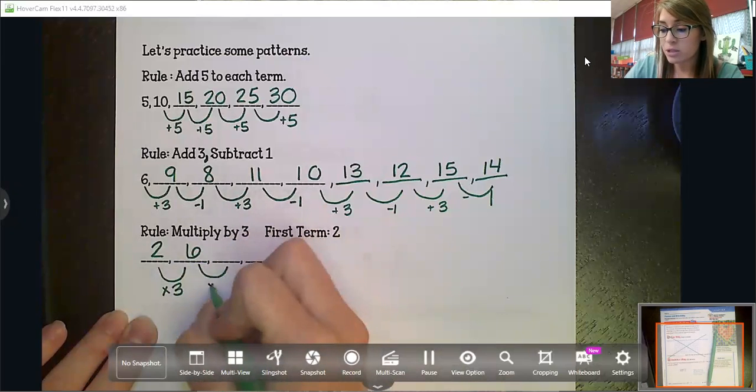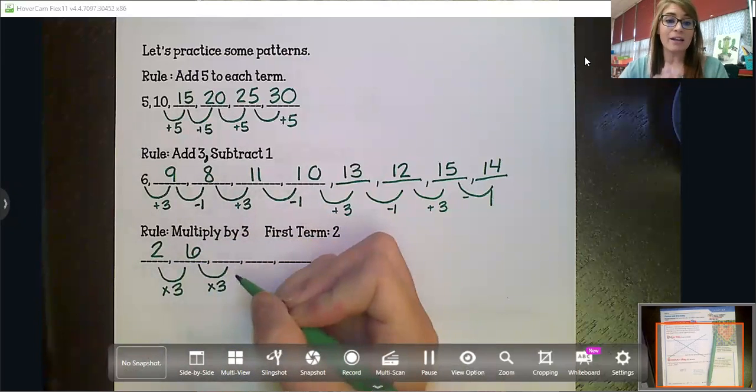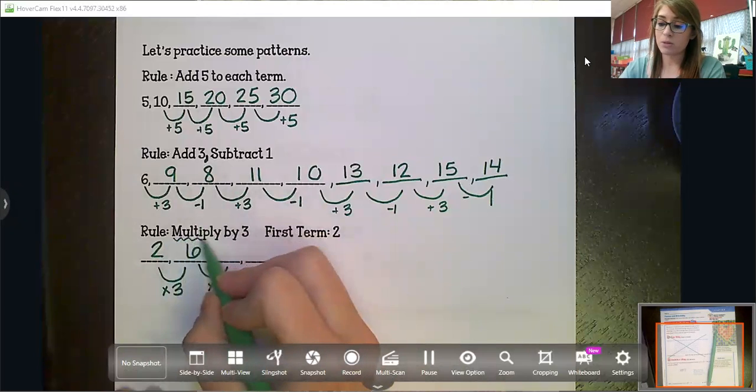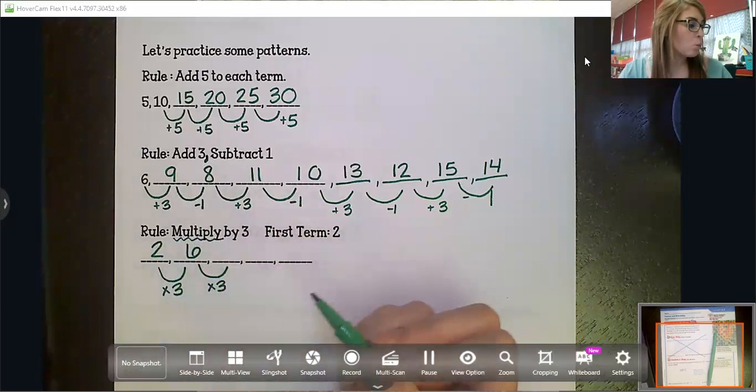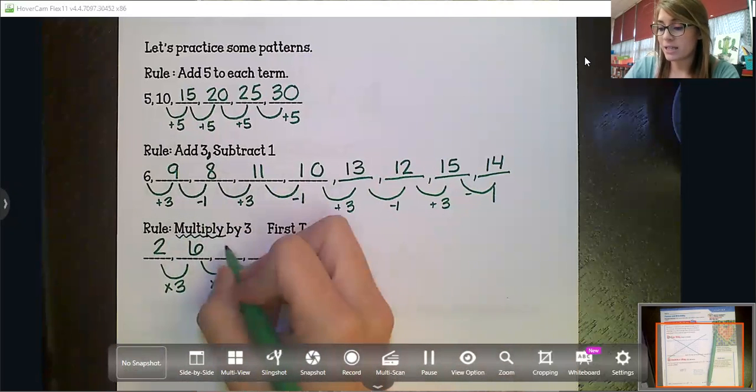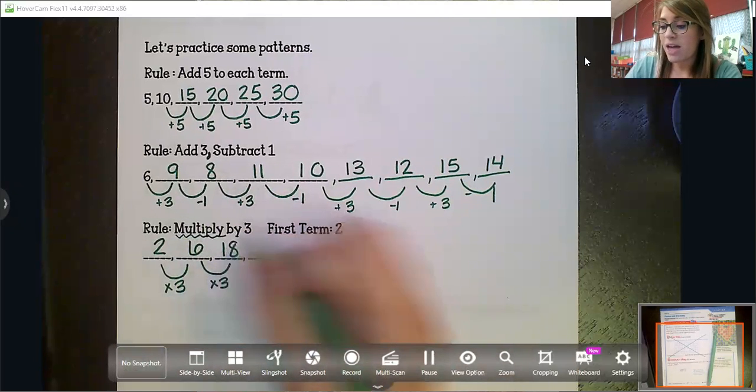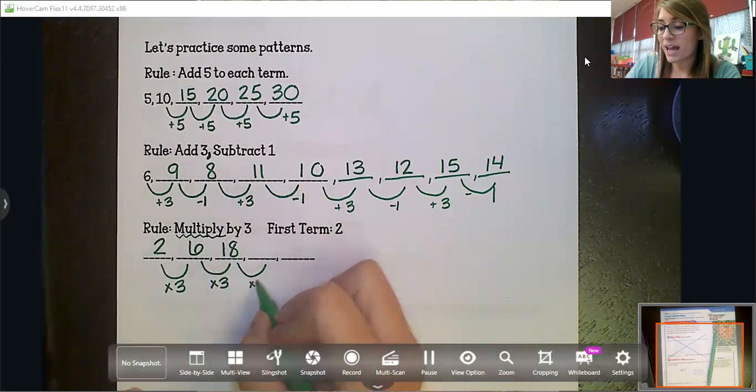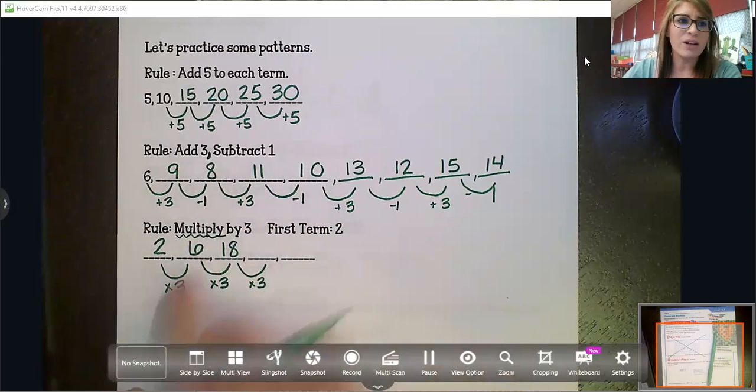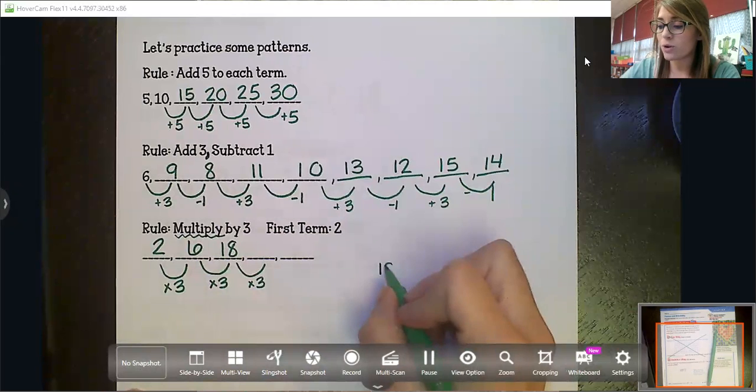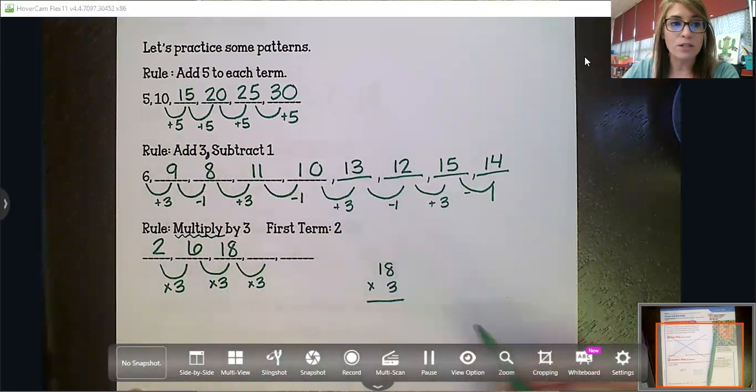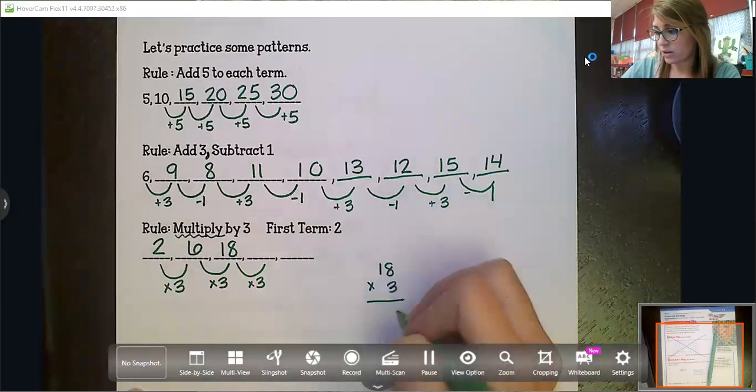Six times three. Now make sure we're not adding three because the rule does say multiply. Six times three is 18. And then we have to multiply again. 18 times three. Now we don't know 18 times three off the top of our head. So that is okay. We know how to go and work that out over to the side. Eight times three is 24.